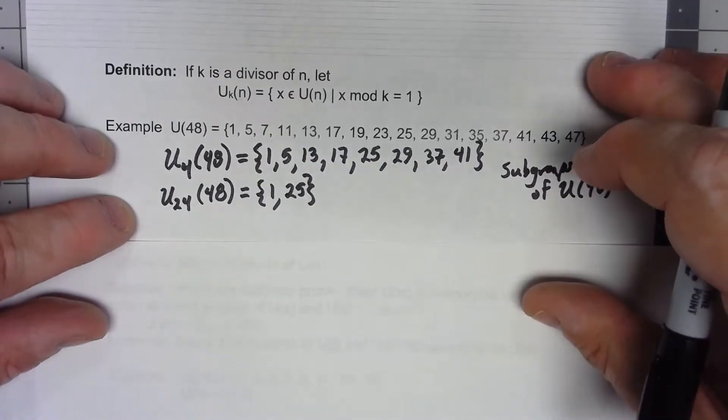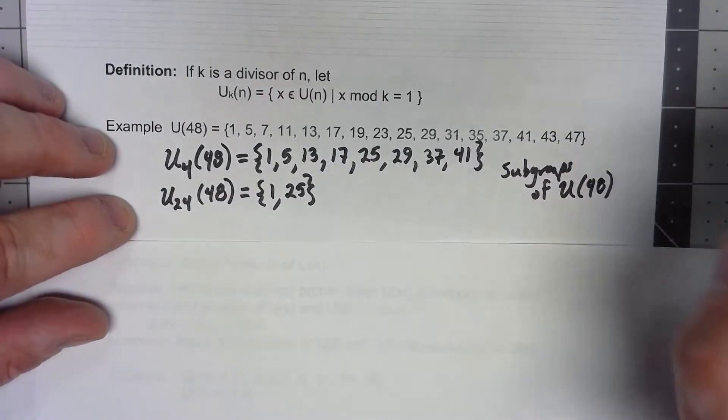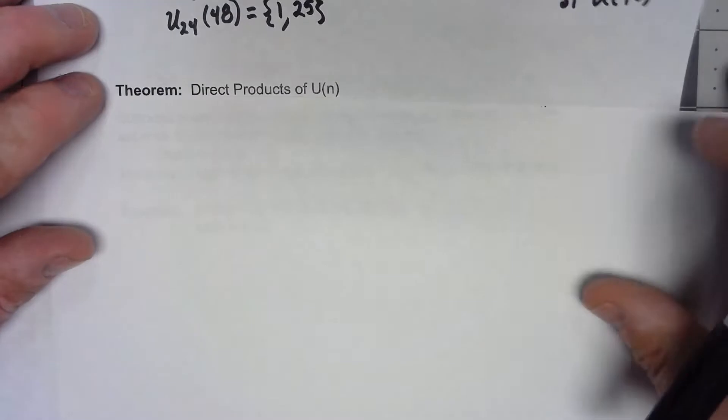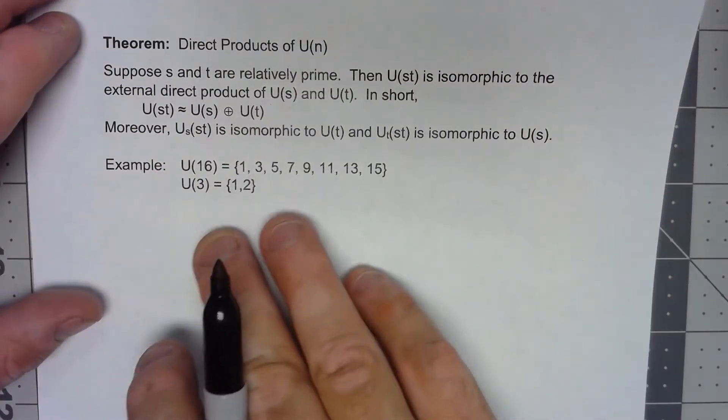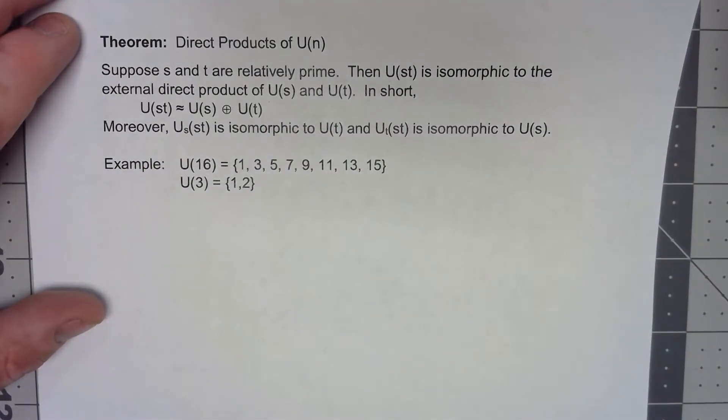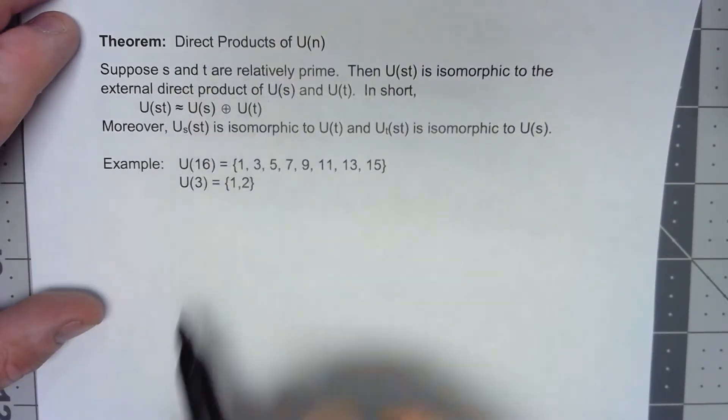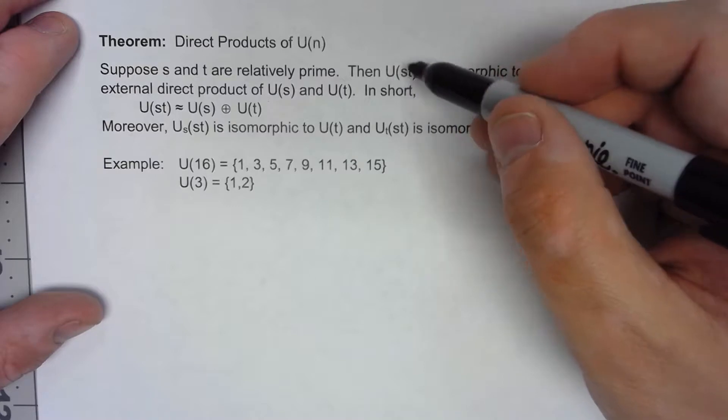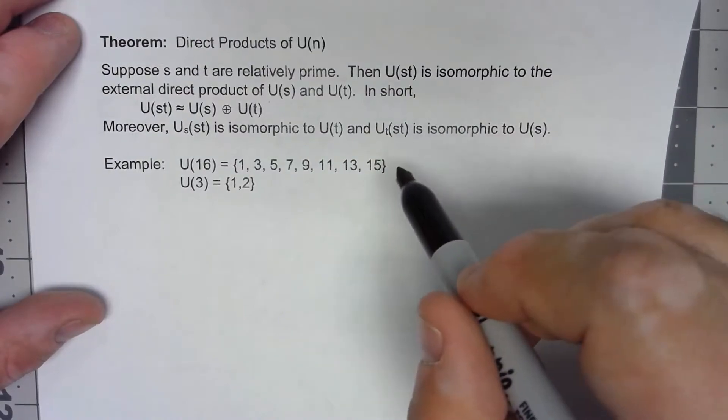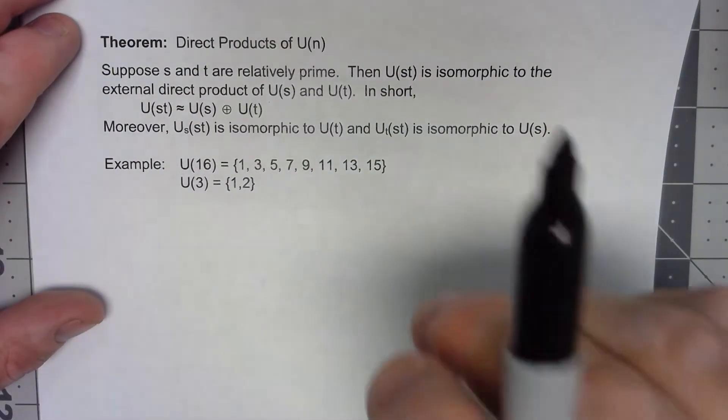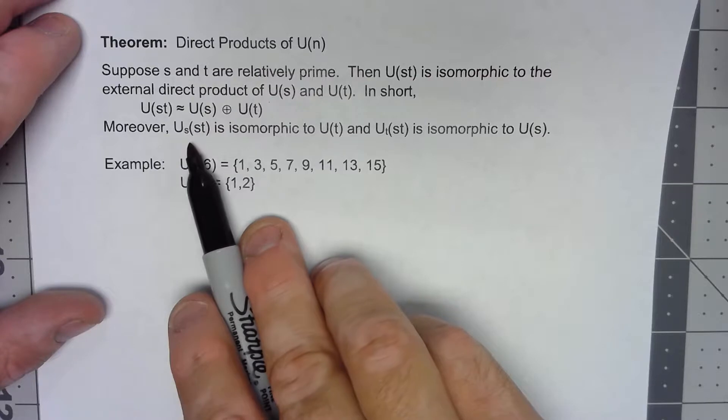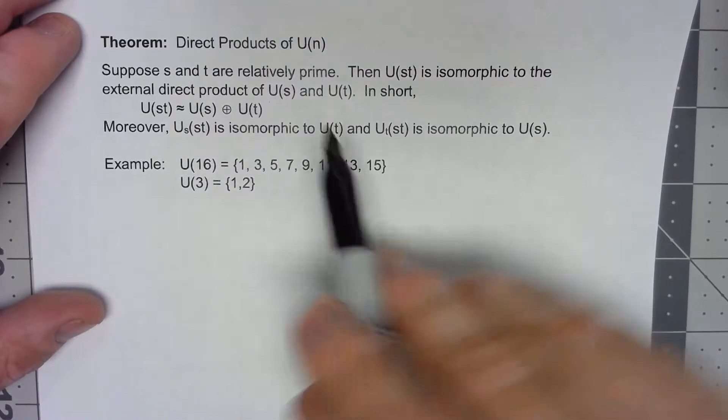Now let's use that idea of this weird subgroup kind of thing and let's prove something. So we want to look at direct products of groups. So suppose we have two numbers that are relatively prime, we're going to say that U(st) is isomorphic to the external direct product of U(s) and U(t). In short, U(st) ≅ U(s) ⊕ U(t). Moreover, U_s(st) is isomorphic to U(t) and U_t(st) is isomorphic to U(s).